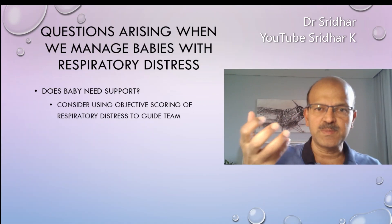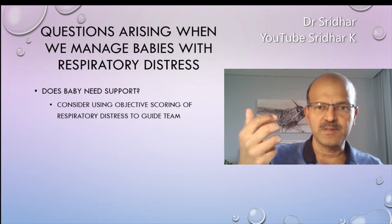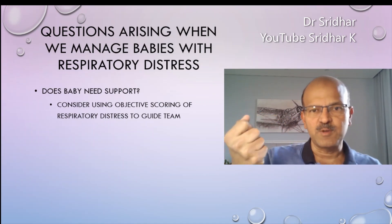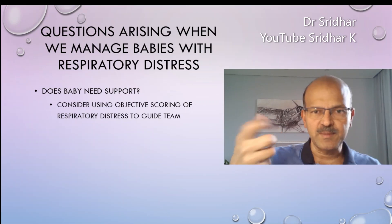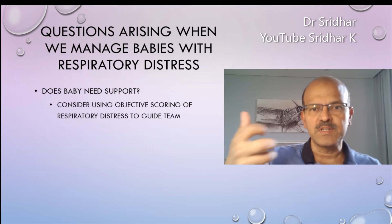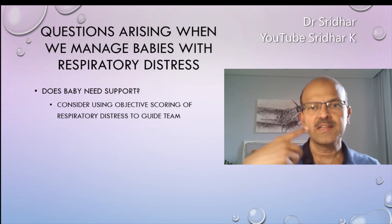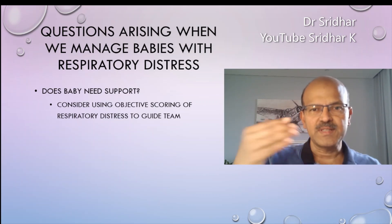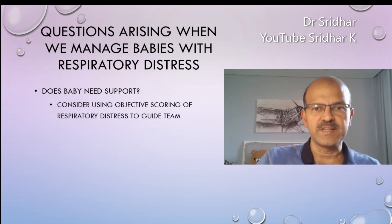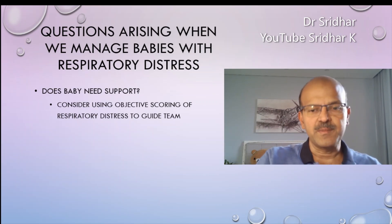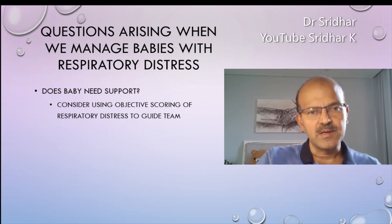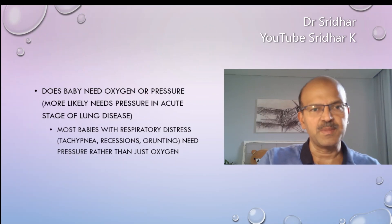The definition of respiratory distress is the presence of visible distress in the form of increased respiratory rate or tachypnea, increased work of breathing with subcostal and intercostal retractions, and grunting may or may not be present. Monitoring may also show difficulty in oxygenation. Once we have decided that the baby has respiratory distress, we look at what support the baby needs.